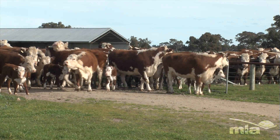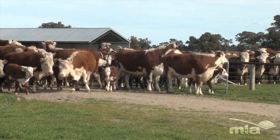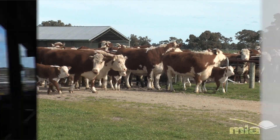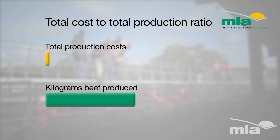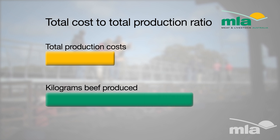Now it would be a mistake to think that the aim of the whole exercise is simply to cut costs. It's about figuring out a way to increase the amount of beef or lamb you produce for every dollar it costs you — and sometimes, but not always, the way to do that is to increase your total costs for an even greater increase in total production.